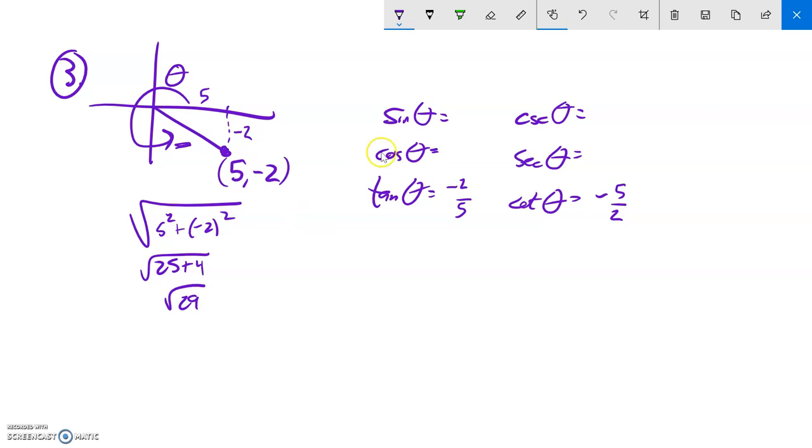Let's think about sine. Sine's about height, so it's y over r, that height over the radius. So negative 2 over square root of 29. Cosine is going to be the width, so that's 5 over square root of 29.